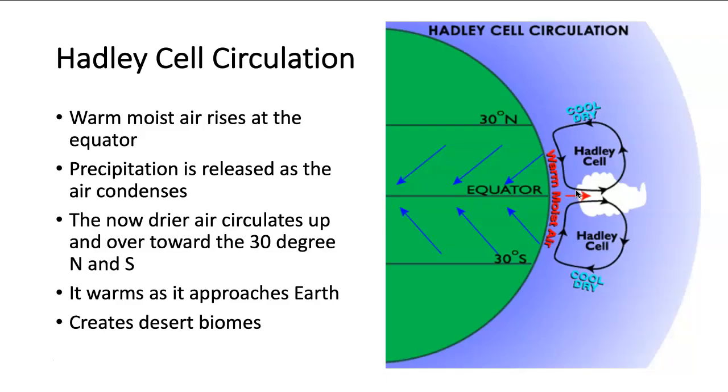But as that cooler and drier air circulates up and over towards the 30 degree north and 30 degrees south mark, you can see that it is going to be drying out and sinking. But as it sinks it's also going to warm back up as it approaches the earth. So consequently around those 30 degree north and south marks we tend to see a lot of deserts. And in fact if you were to go look at a map and find where the Sahara desert is in Africa, you would see that it lines up really close to that 30 degree north mark.